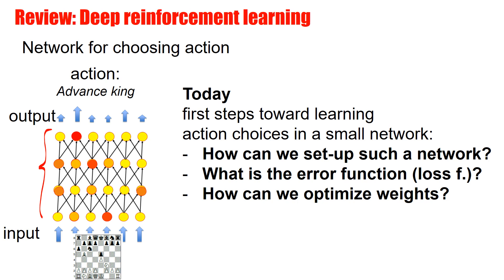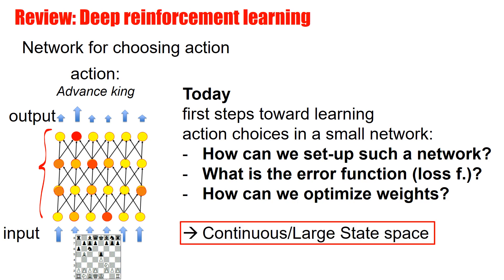We'll ask several questions: How can we set up such a network? What is the error function? Normally, changes of weights are defined by an error function — what is this loss function for action learning? And how can we optimize the actual connection weights? In doing so, we'll cover temporal difference learning in the form of several variations of SARSA.